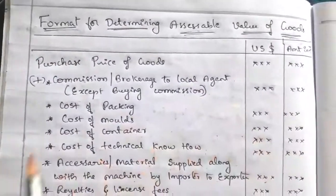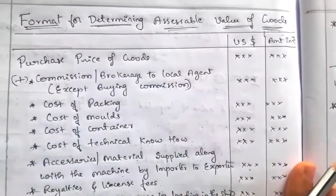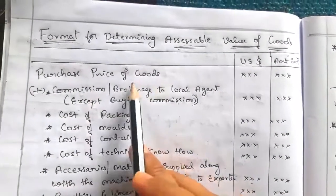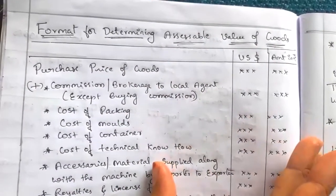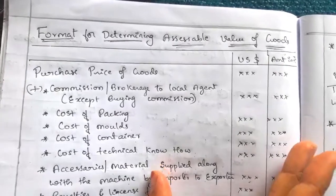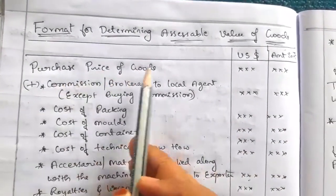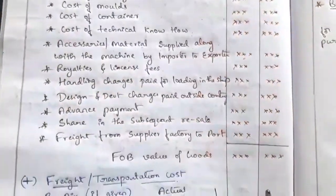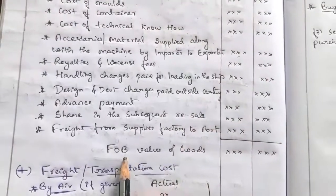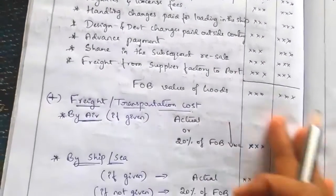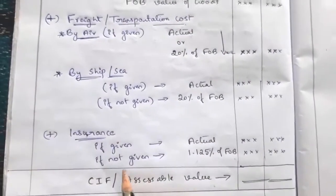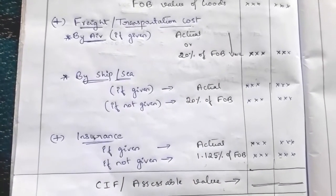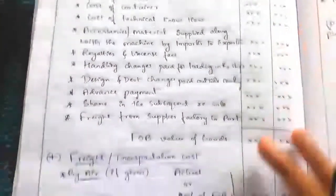Now see the format. We have to draw three columns: particulars and two amount columns. The calculation of accessible value of goods starts with the purchase price of goods. For this purchase price we have to add some expenses to get the free on board (FOB) value of goods. After that, we add more expenses to get the CIF — cost, insurance, and freight — which is the accessible value of goods. There are two parts of expenses to add.